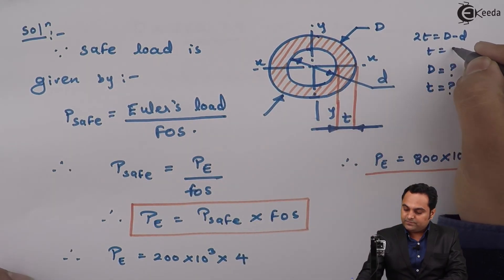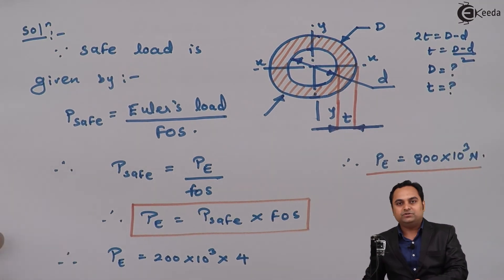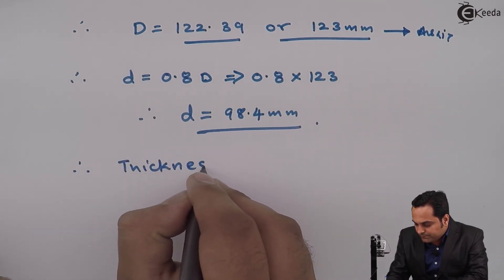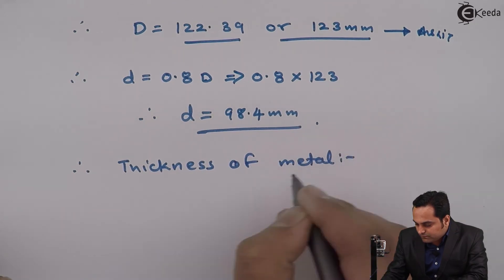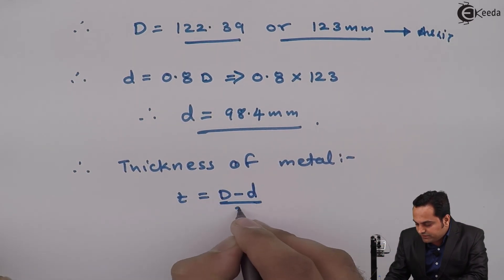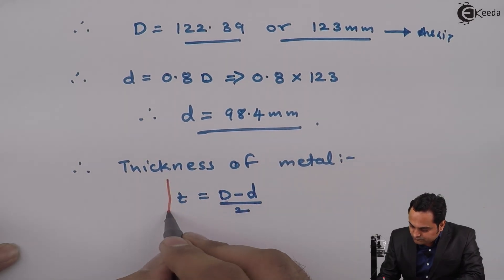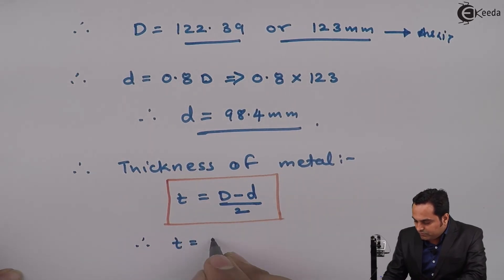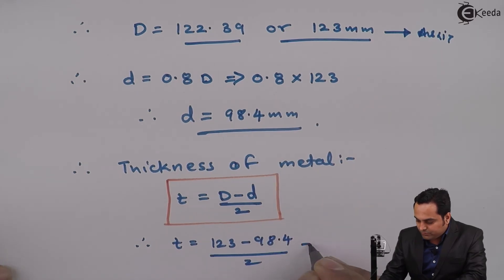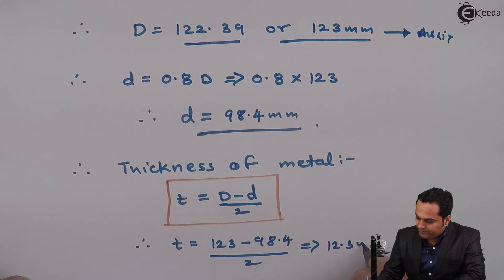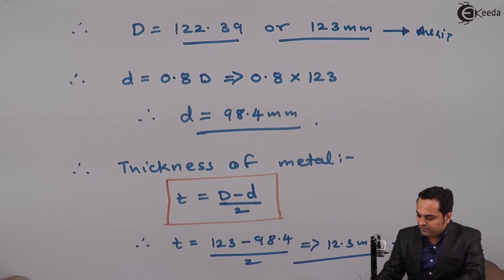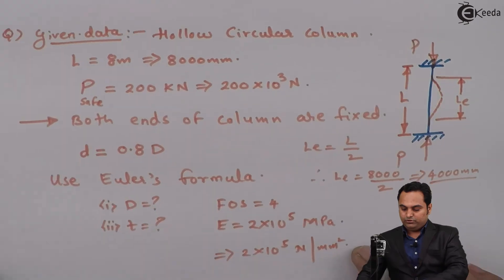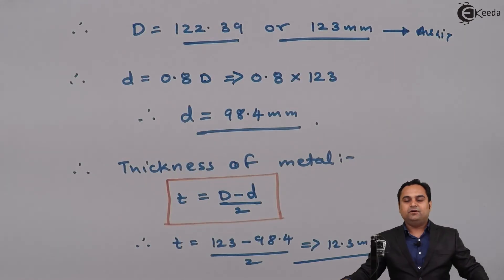The metal thickness t is given by t = (D - d) / 2. Therefore, thickness t = (123 - 98.4) / 2 = 12.3 mm. This is the second answer. Both unknowns — external diameter D = 123 mm and metal thickness t = 12.3 mm — are now found, completing the question.